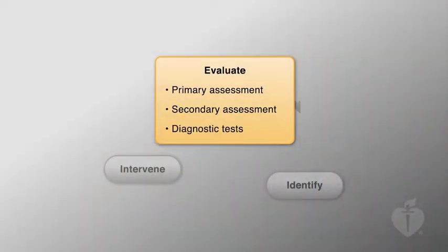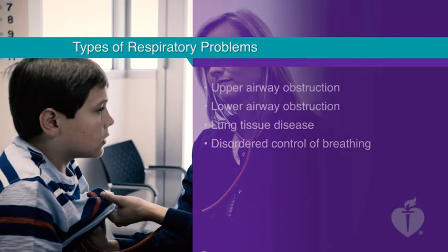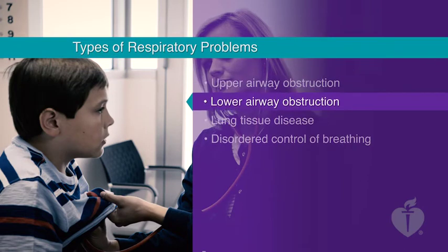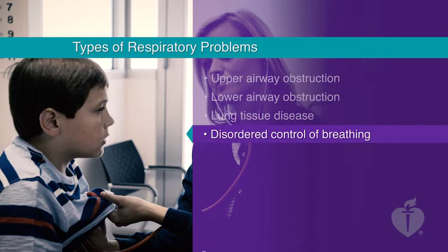As you would with any seriously ill child, you should use the evaluate, identify, intervene sequence to respond to a pediatric respiratory emergency. When assessing a child, there are basically four different types of respiratory problems to identify: upper airway obstruction, lower airway obstruction, lung tissue disease, and disordered control of breathing.